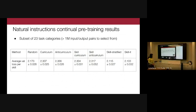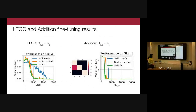Q: Why does curriculum learning perform even worse than random? A: Curriculum learning has more hyperparameters around mixing rate and pacing function — we did explore them and these were the best numbers, but it's not entirely clear why it underperforms. There may be something worth investigating further.